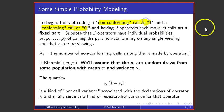Think about having J operators each make M calls on a fixed object—on a fixed part. So we're going to ask each of some number of operators to tell us whether a part is good or bad, conforming or non-conforming.